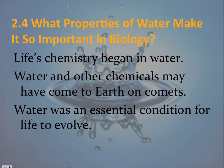Life's chemistry began in water, and water and other chemicals may have arrived on Earth via comets. Water is an essential condition for life to develop. That's it for this chapter — go ahead and complete the homework assignments and read the chapter. If you have any questions, please feel free to ask during tutorial days or email me.